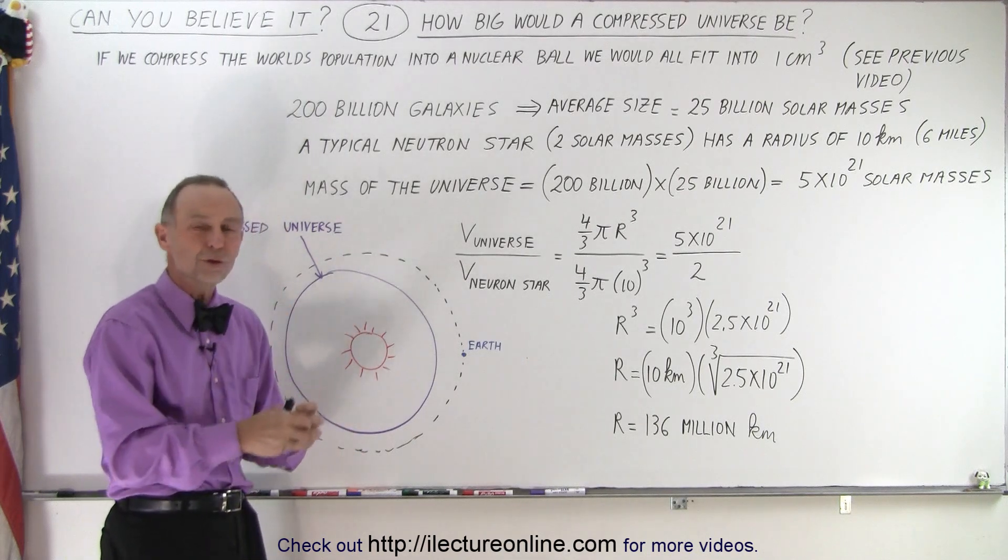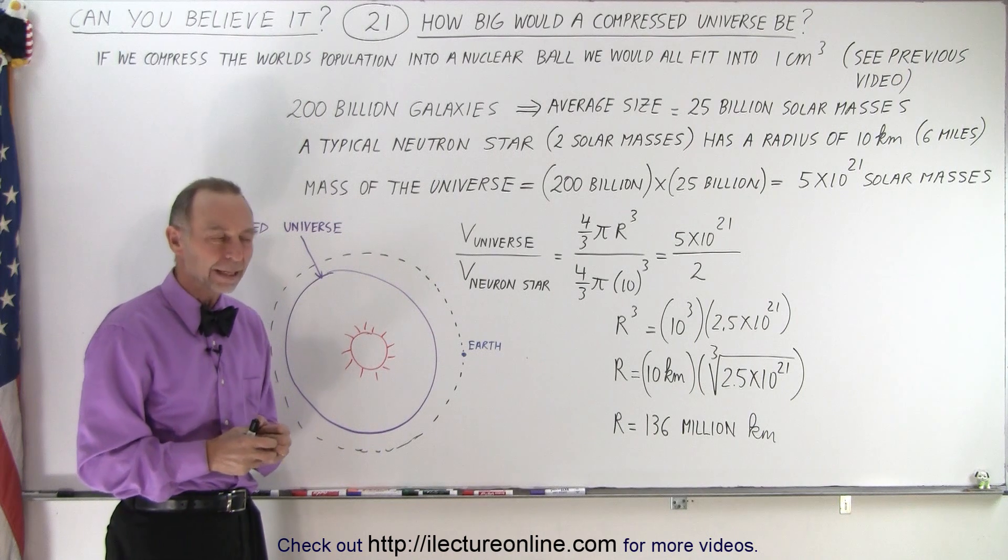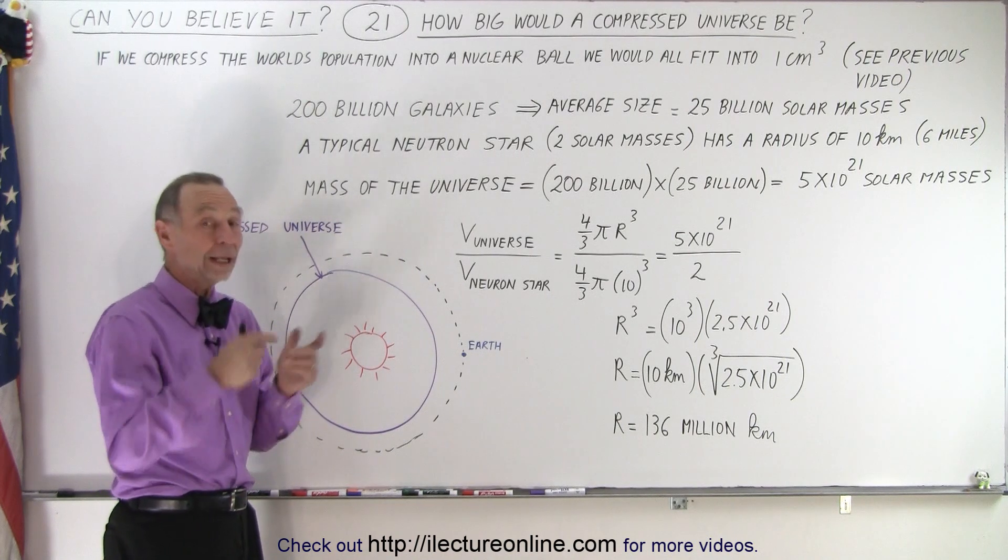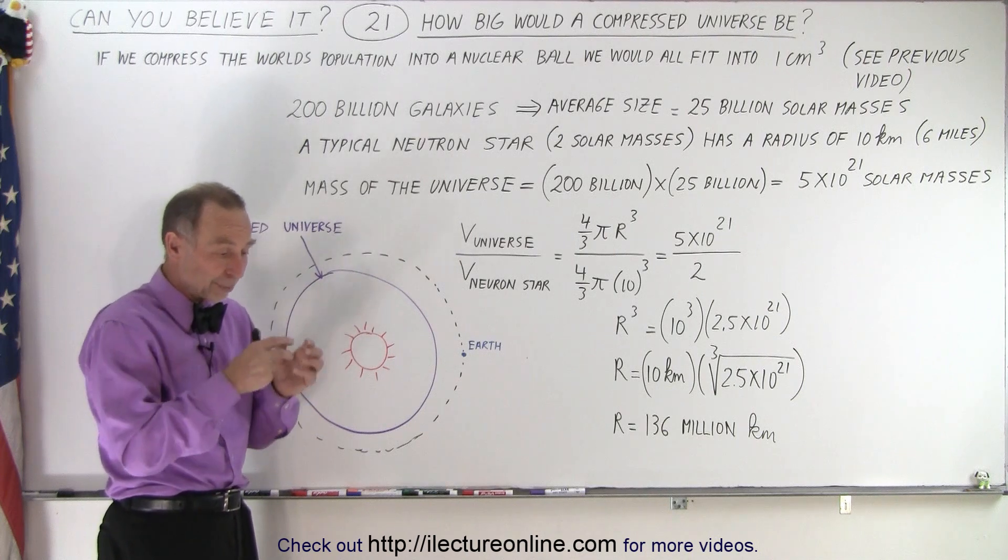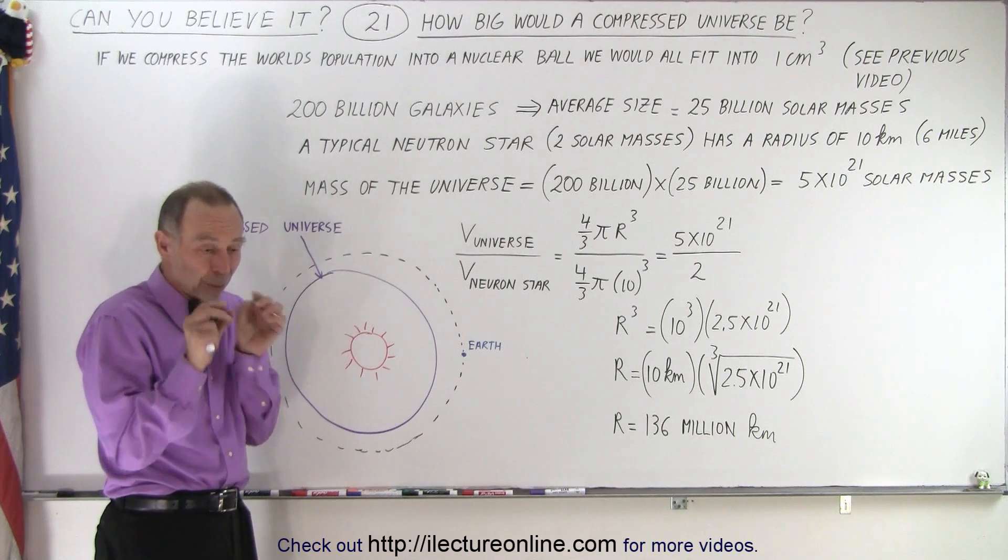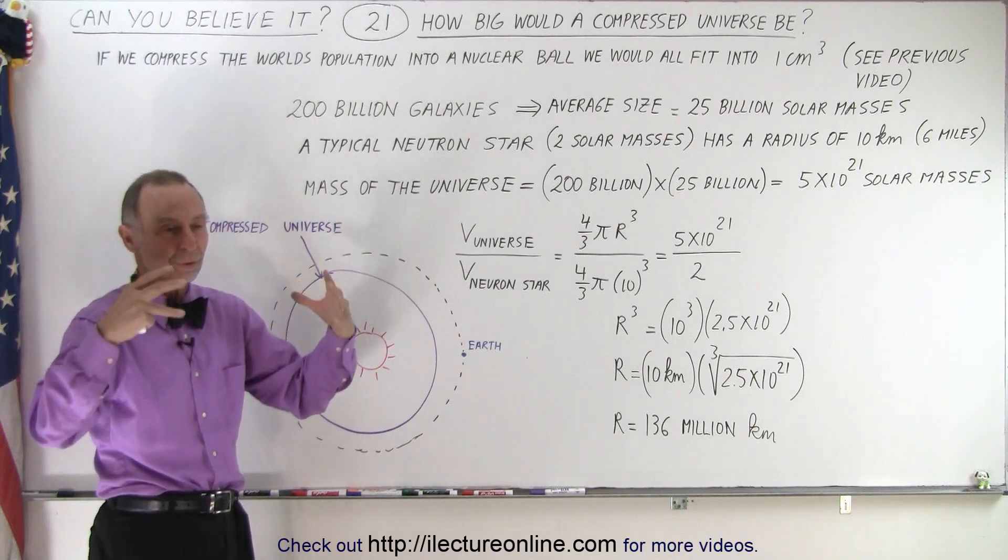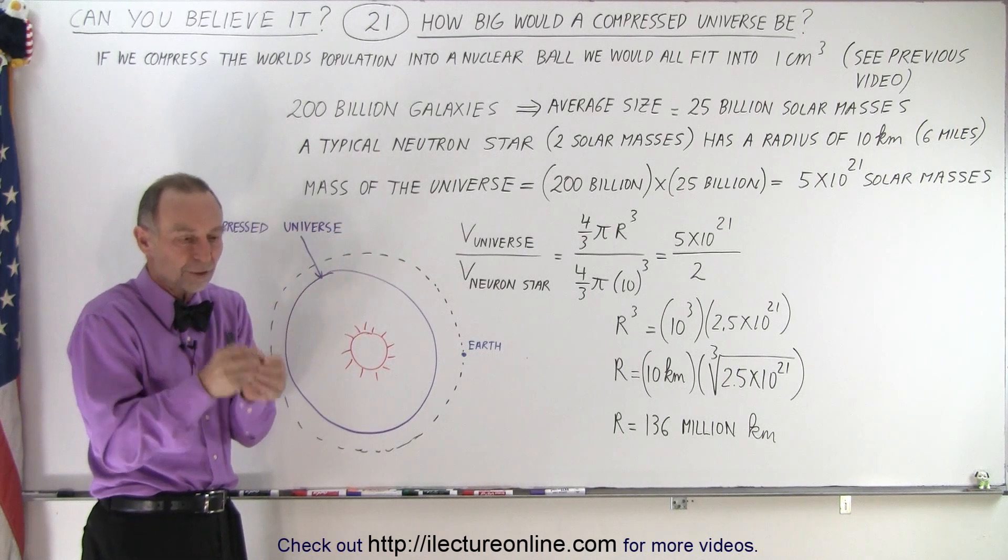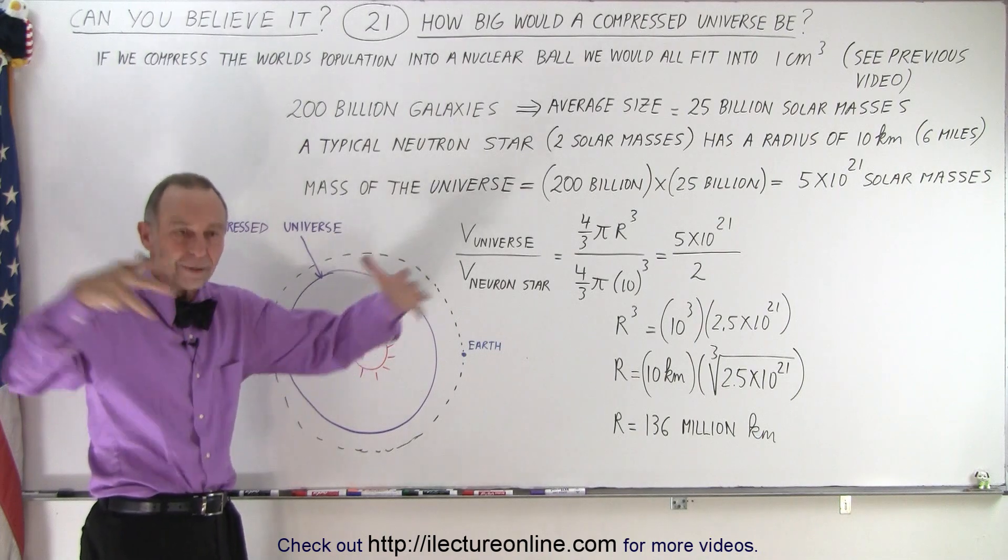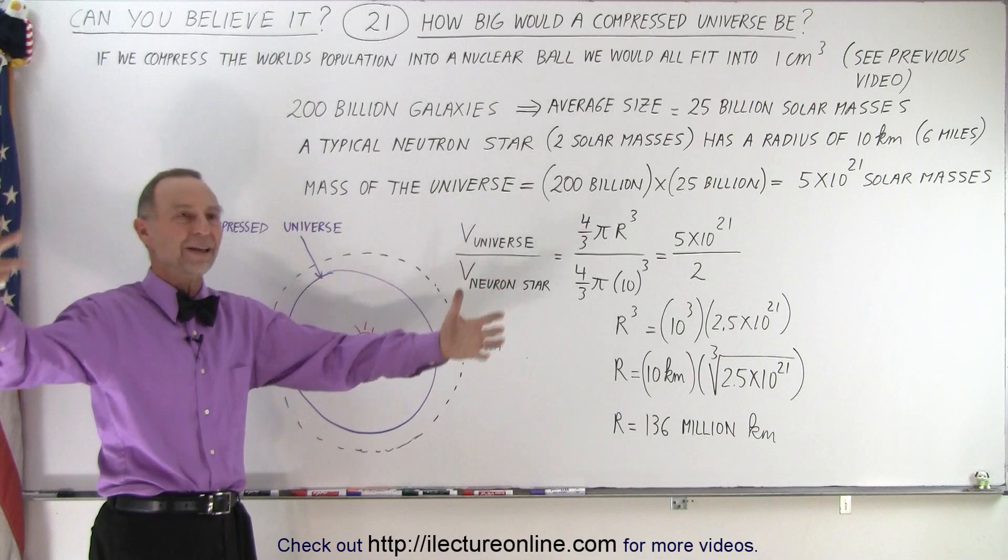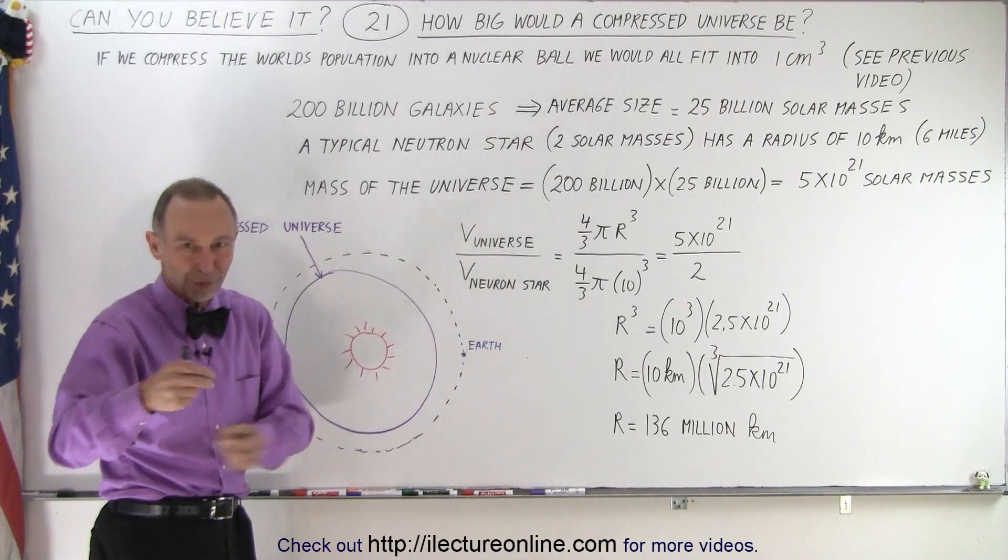We already learned from a previous video that protons and neutrons are made out of quarks, and quarks are tiny little things that somehow make up this huge neutron and this huge proton. The mass of the three quarks combined is less than one percent the mass of the entire proton or neutron. How do you expand the mass by a hundredfold by just putting three quarks in a certain arrangement?